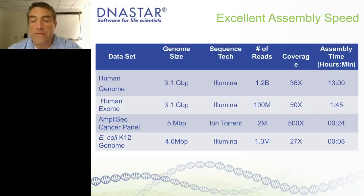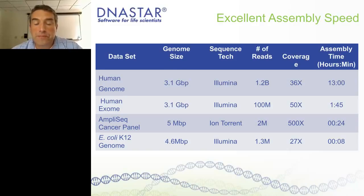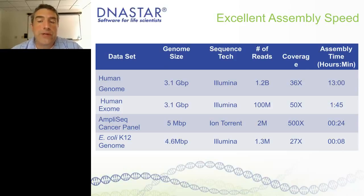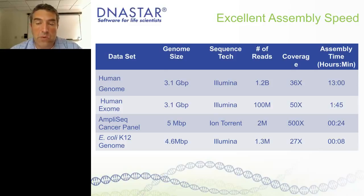One of the first questions we get with desktop software is about performance — can modest hardware compete in terms of speed with software running on much more expensive and powerful hardware? I like to show this benchmark. For a human genome at 36x coverage, it's about 12 hours for assembly time. That includes alignment of the data to the reference genome, all the SNP calculations, and building all the BAM output files visualized downstream. Smaller projects like human exomes take under two hours.